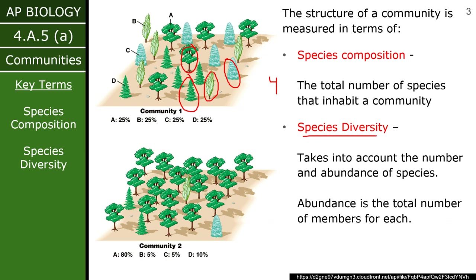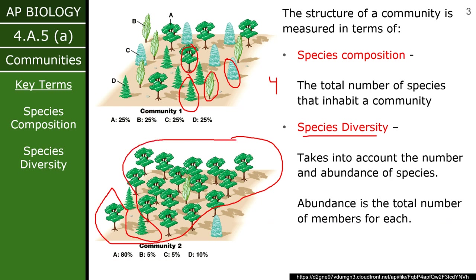Species diversity, however, is not only a pure number — it also takes into account the abundance of a given species. So some species will be present in much higher numbers than others. Community two is showing you an example of that. If you were to circle all the individuals of species A, that would be 80% of this community.